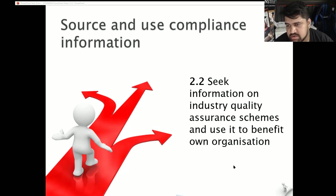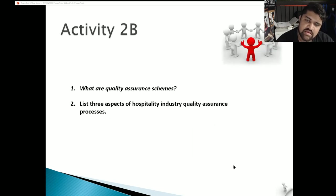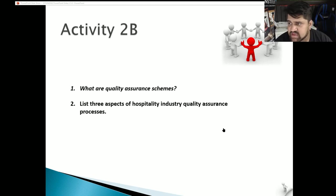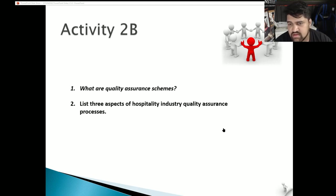2.2: seek information on industry quality assurance schemes and use it to benefit your own organization. Quality assurance helps prevent errors via systematic measurement, comparison within a standard, and monitoring processes associated with feedback. A quality assurance scheme is a process or policy in your workplace where you want to prevent mistakes or defects while making items or manufacturing products, and avoid problems when delivering products or services to customers. This is part of your quality management process carried out on a regular basis.